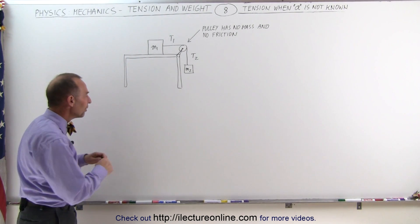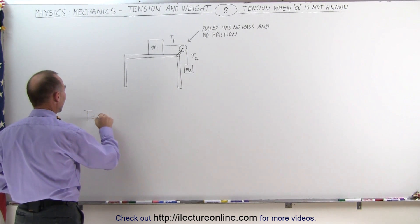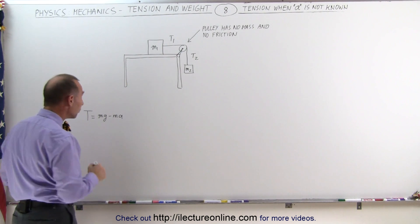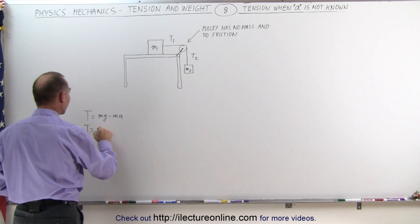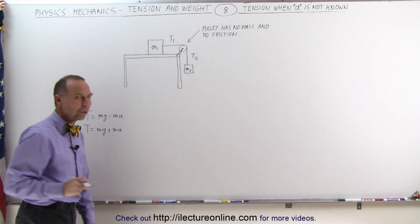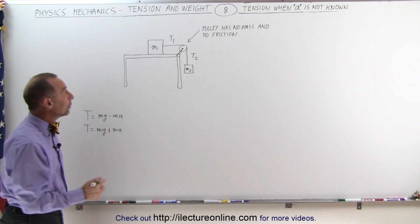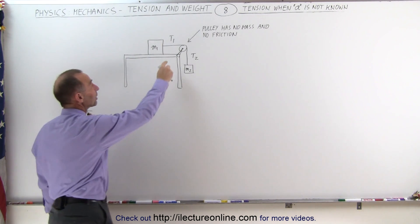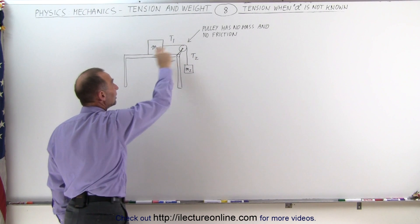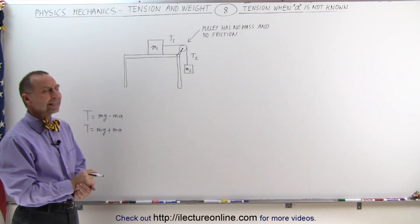We know that the tension can always be found by the following equation: tension equals mg minus ma if the object is accelerating downward, or tension equals mg plus ma when the acceleration is upward. But how do we handle a case where the object is sideways, being pulled by the string in the horizontal direction, where there's no mg involved at all?